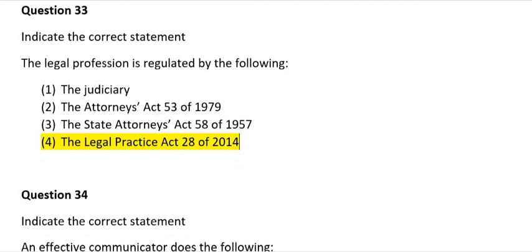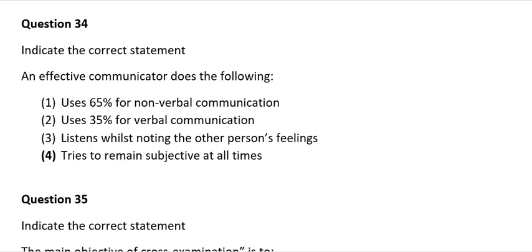Question 34: Indicate the correct statement. An effective communicator does the following: 1) Uses 65% for non-verbal communication; 2) Uses 35% for verbal communication; 3) Listens while noting the other person's feelings; 4) Tries to remain subjective at all times. The correct answer is number 3: listens while noting the other person's feelings.